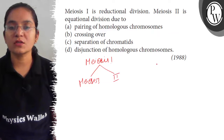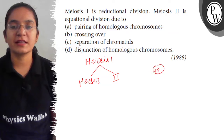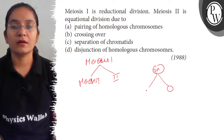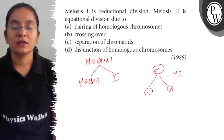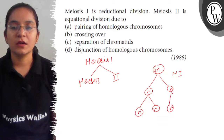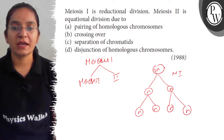During meiosis 1, the diploid cell undergoes meiosis, two daughter cells are produced and the chromosome number reduces to half. While during meiosis 2, the chromosome number remains the same, and ultimately from the parent cell, four daughter cells are produced.